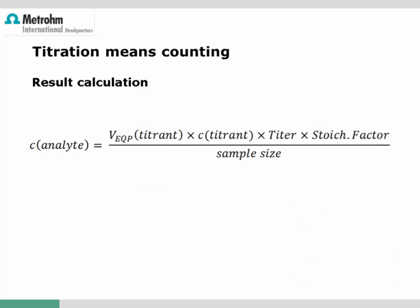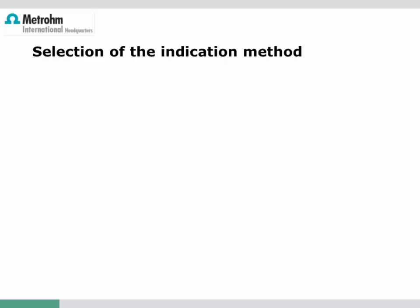When all required variables are available, we can calculate the result. The concentration of the analyte is the product of the volume at the equivalence point times the titrant concentration times the titer value and the stoichiometric factor, all divided by the sample size. The advantage of modern titration instruments is that the calculation of the final result is done directly after the titration is finished. However, the best calculation formula is useless if the indication of the end or equivalence point is not correct.